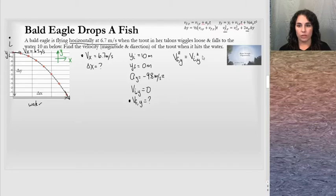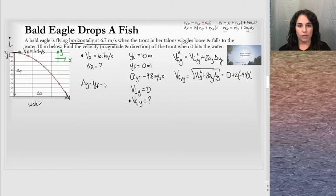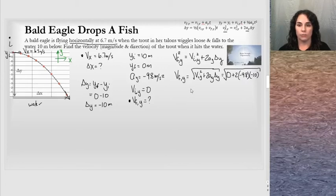I'll write the equation in general form, solve for the quantity we need, and plug in values. We want v_final_y, so: v_final_y = √(v_initial_y² + 2·a_y·Δy). Plugging in: v_initial_y = 0, a_y = −9.8 m/s², and Δy = y_final − y_initial = 0 − 10 = −10 m. The two negatives multiply to give a positive under the radical. Running this through the calculator gives v_final_y = 14.007 m/s.